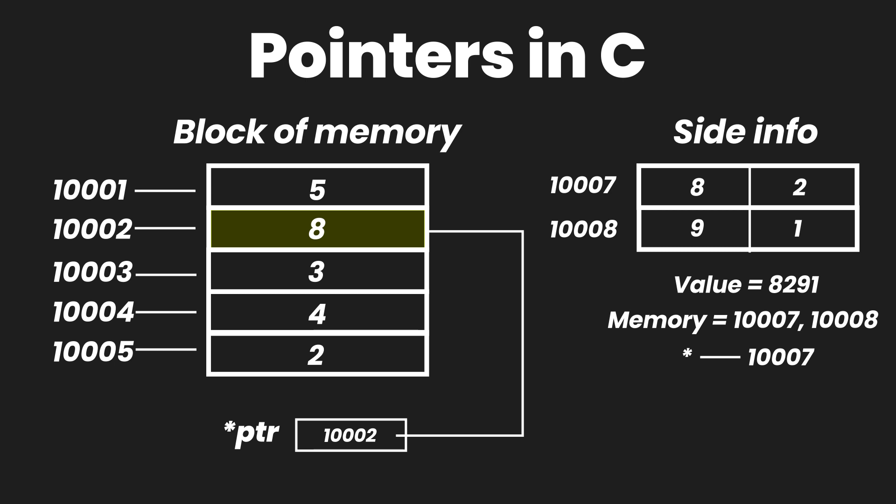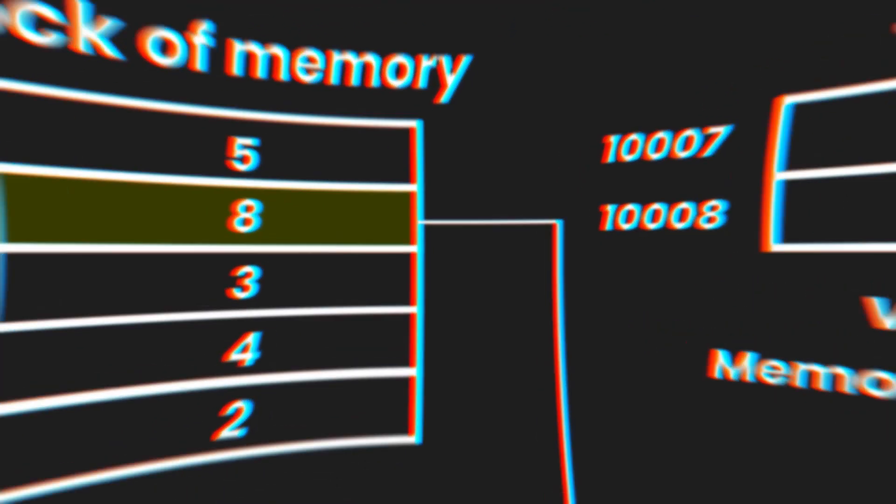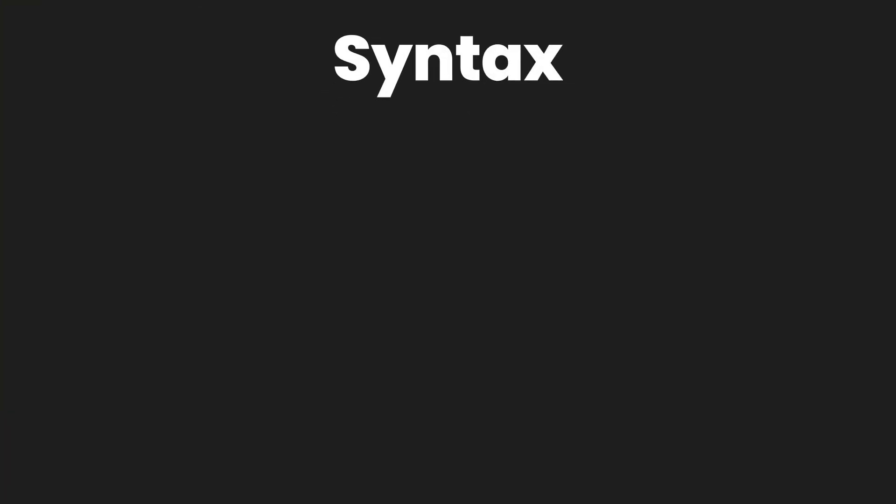Now that we know what pointers are and how they point to a particular value in memory, we can go over how to declare and define pointer variables in C. To declare a pointer variable, we have to follow a specific syntax. The syntax includes a data type, which tells us the type of the value this pointer is referencing to. Keep in mind this data type is not the data type of the pointer variable itself, rather it is the data type of the value this pointer is going to be referencing to.